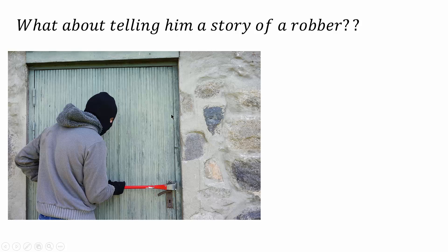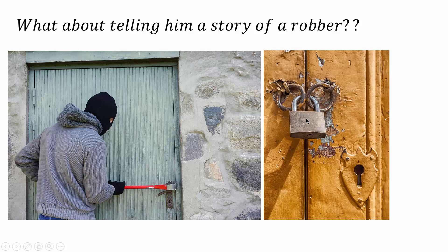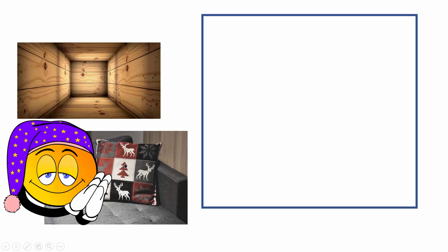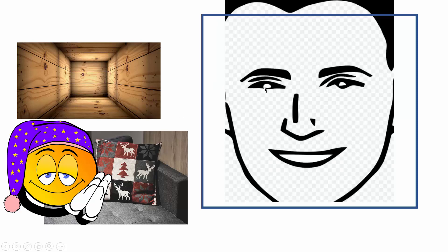Imagine that a robber gets into your house, breaks the lock down, and enters the room. Imagine he enters a room which is in the shape of a cube — assume every side is in the shape of a square. The robber finds a man sleeping on a pillow in a bed. Assume this is a square pillow and the head is lying on it.